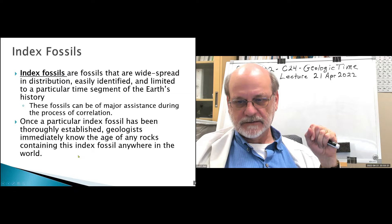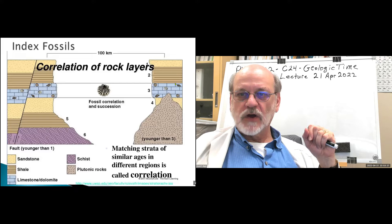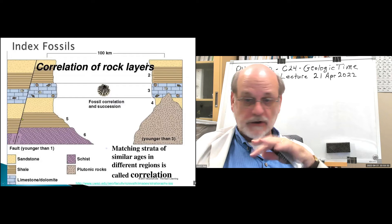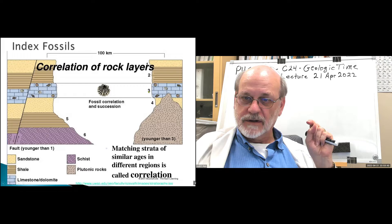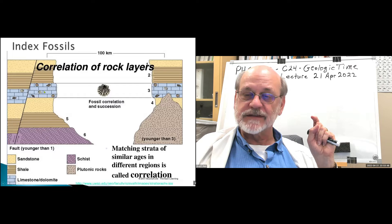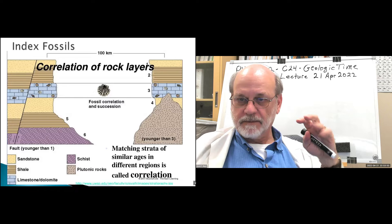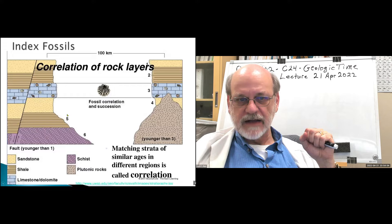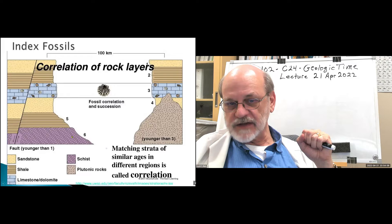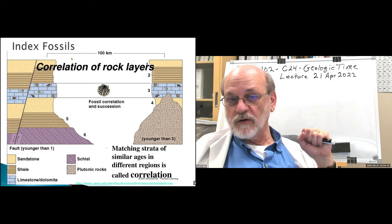Here's an example: rock layers at different locations have an identified index fossil that only occurs in one specific layer at each site — those two layers are correlated. Using that correlation we can infer things about other rock layers. For instance, layer five is missing on one side, layer six is missing on the other side, while layers one and two are present on both sides. This also helps us identify unconformities.